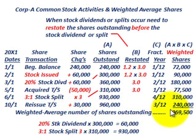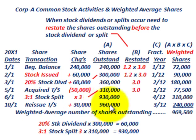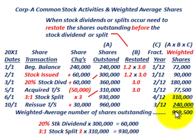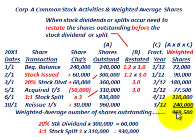That's the weighted average number of shares outstanding — 969,500 — compared to the 960,000 we had through October 1st. That's the basic example going through the mechanics of determining the weighted average number of shares outstanding, which you would use for earnings per share and other calculations.